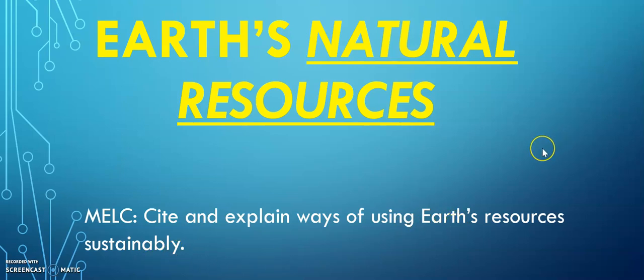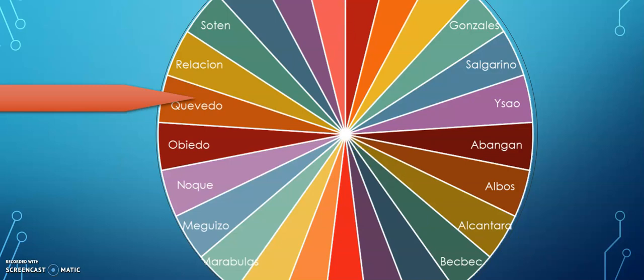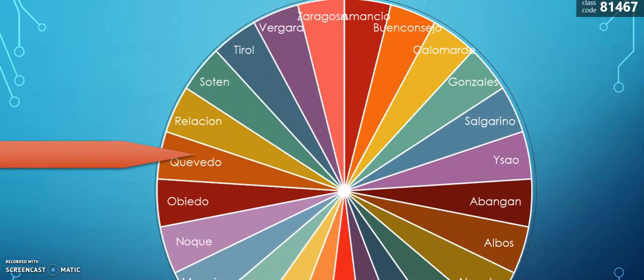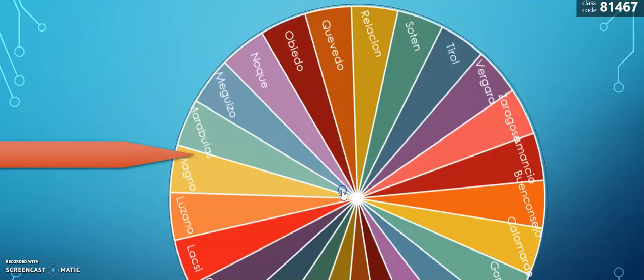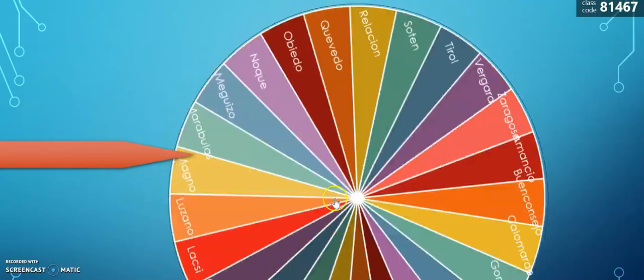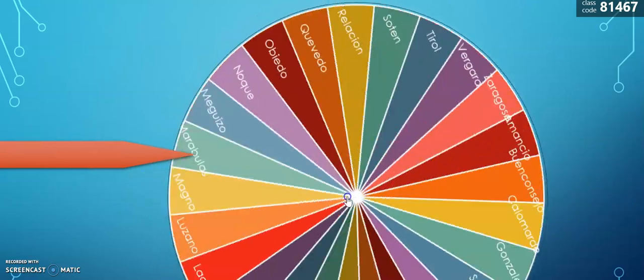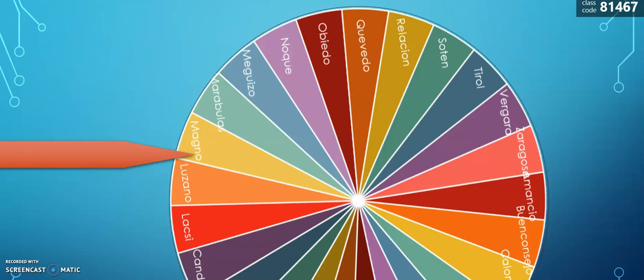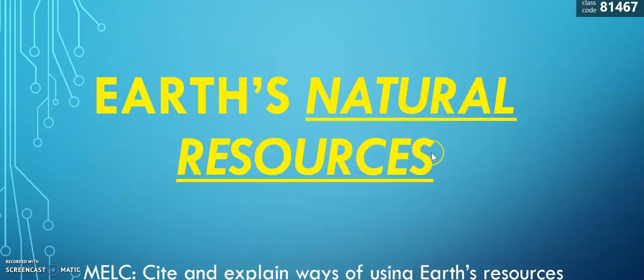In this discussion, this is more on interactive activities with the students. I'm going to ask one student to define natural resources in their own words using this wheel of names. I make a wheel of names — if you want a tutorial on how to make this wheel of names, I can give you one. Just click on the center portion and using this arrow, I will call Magno, for example, to answer my question regarding natural resources.